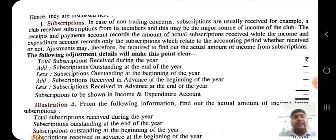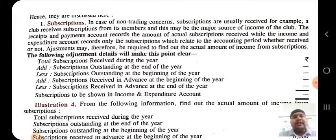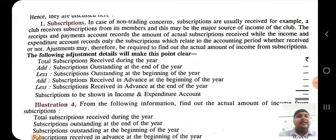The first topic of this chapter is subscription. Especially for the non-trading concern, subscription for not-for-profit organizations — NPOs receive subscription from their members as annual fees, or as the cost of services provided to them. In case of non-trading concern, subscriptions are usually received. For example, a club receives subscription from its members, and this may be the major source of income of the club.